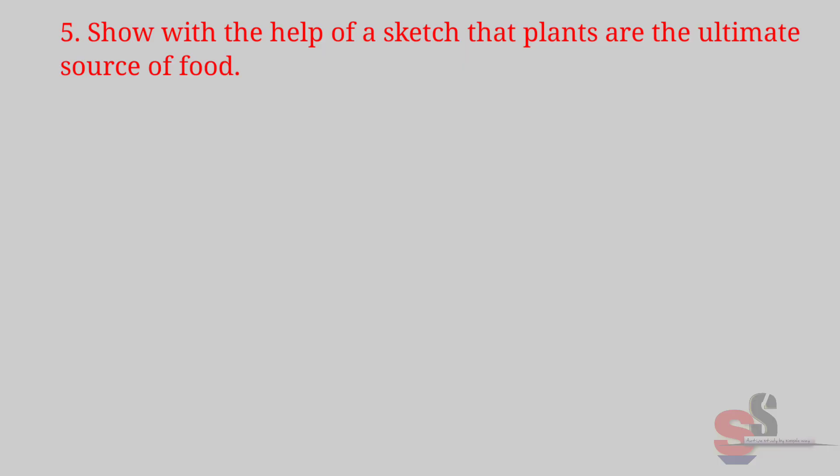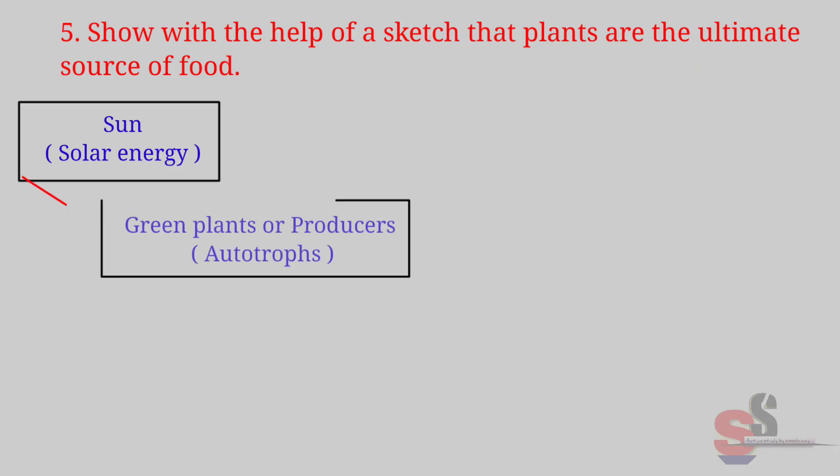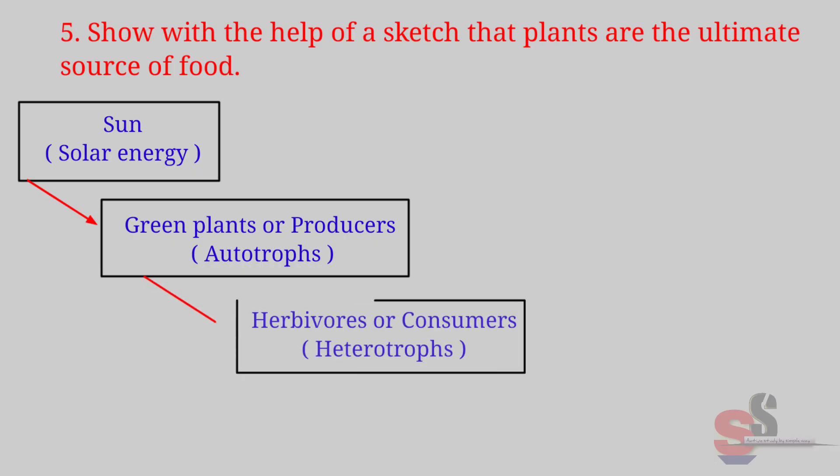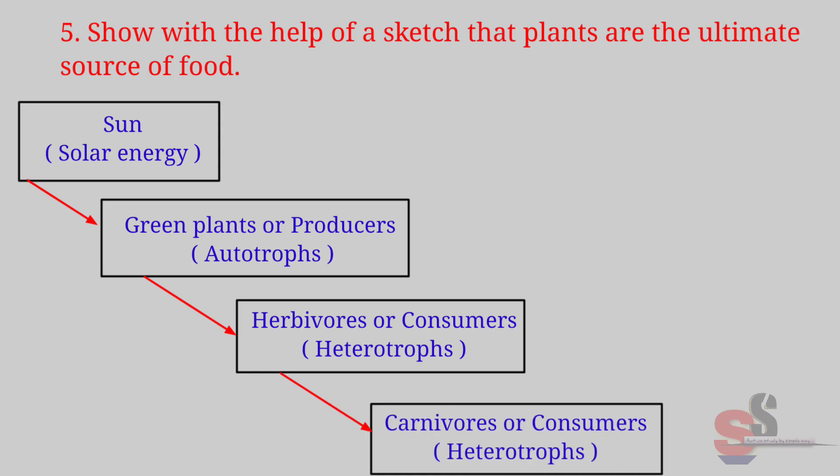Question number 5: Show with the help of a sketch that plants are the ultimate source of food. The sketch is drawn in this way: Sun (solar energy), green plants or producers (that means autotrophs—green plants make their own food), then herbivorous or consumers (that means heterotrophs).